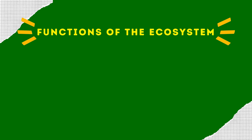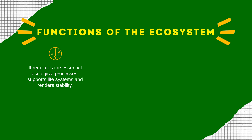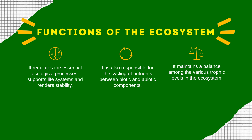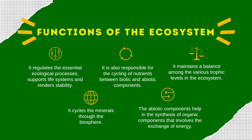Next, the functions of ecosystem. First, it regulates the essential ecological processes — living organisms interact with abiotic factors and maintain a balance so they can survive, supporting life systems and their stability. Second, they are responsible for the cycling of nutrients between the biotic and abiotic components. Third, they maintain balance between the trophic levels in the ecosystem. Fourth, it cycles minerals through the biosphere, recycling minerals via these ecosystems. Finally, the abiotic components help in the synthesis of organic components involved in the exchange of energy.